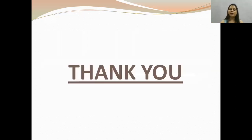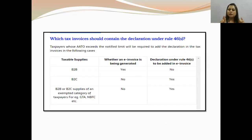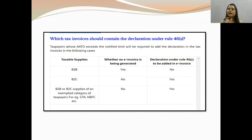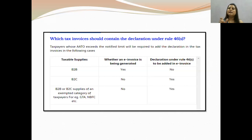So what is the crux — the main purpose of Rule 46S? There are some categories that are applicable for e-invoicing, but the e-invoice is not generated because they are in the exemption category. When they have not made an e-invoice, the person they are dealing with may be confused about why there is no e-invoice. So if a taxpayer is in the exemption category and e-invoicing is applicable on their turnover but they are exempted, then under their regular invoice they will have to add the declaration wording as per Rule 46S. You need to add this declaration in your billing software. Without this declaration under Rule 46S, the invoice will be invalid.